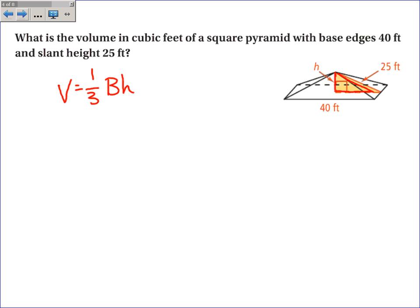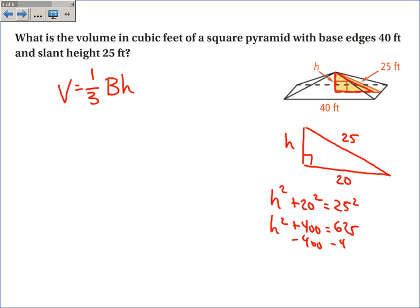So I will redraw this triangle over here. This is the height. The slant height is 25, and this length is 20, since it's half of 40. It's a right triangle, so I can use the Pythagorean theorem to find the length of h. h squared plus 20 squared is equal to 25 squared. h squared plus 400 is equal to 625. So I subtract 400 from both sides. h is equal to the square root of 225, or 15.